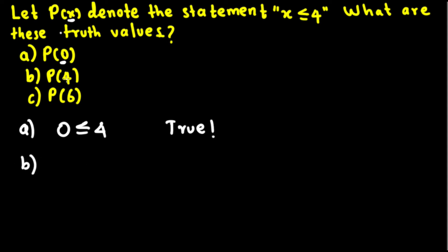Now let's look at the second one. Second one is: 4 is less than or equal to 4. It's not less than 4, but it's equal to 4, so it's also included. So this is also true.